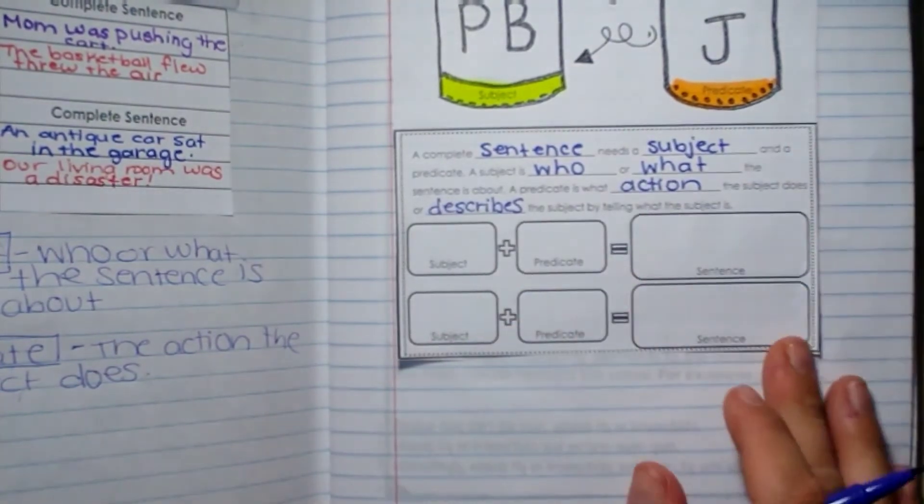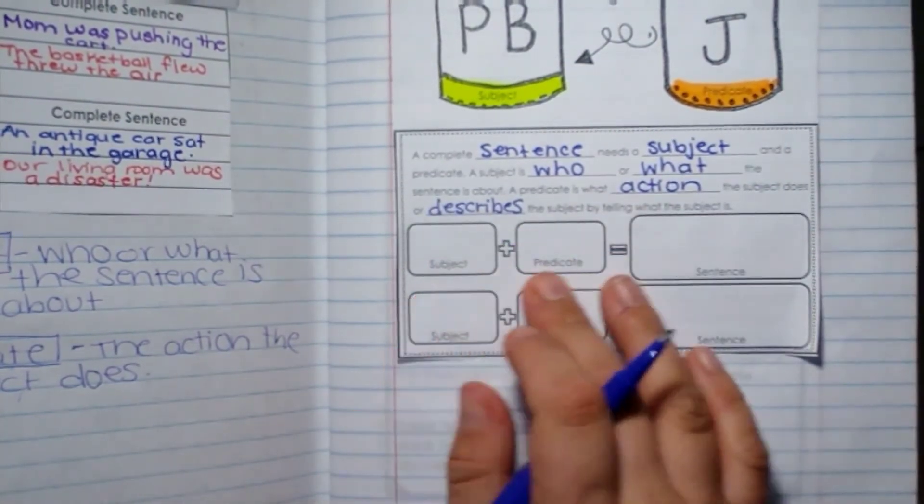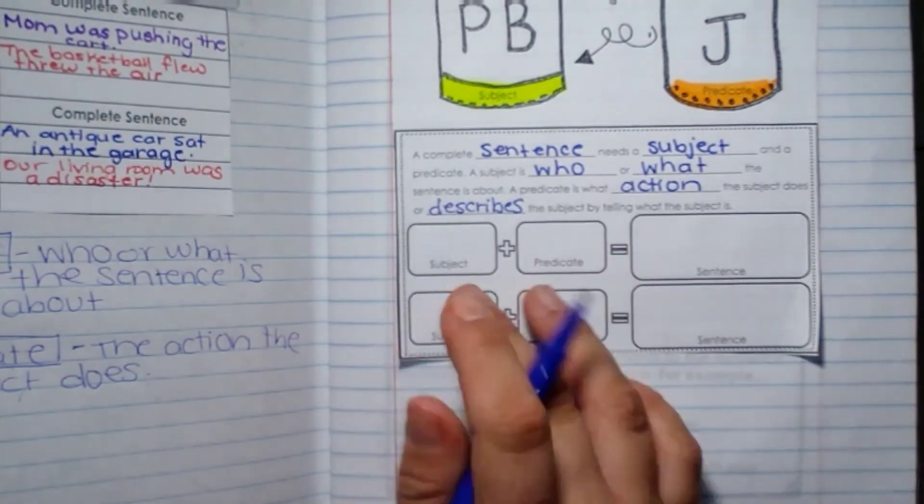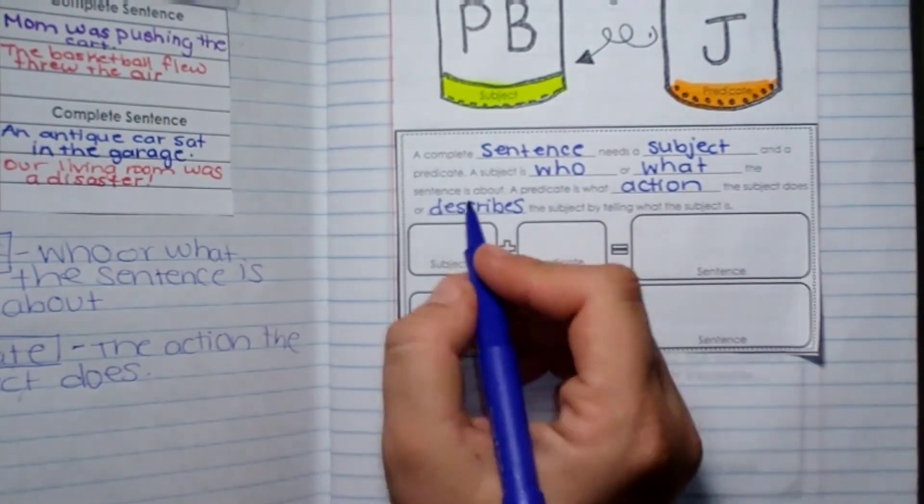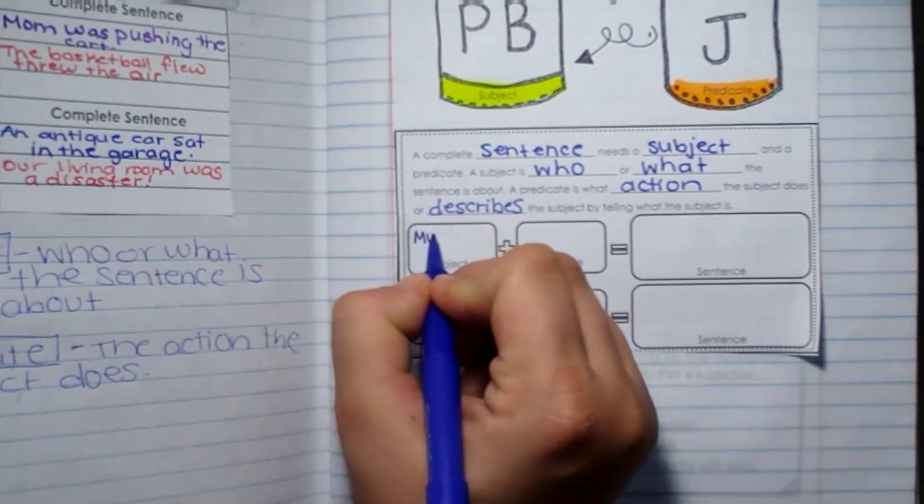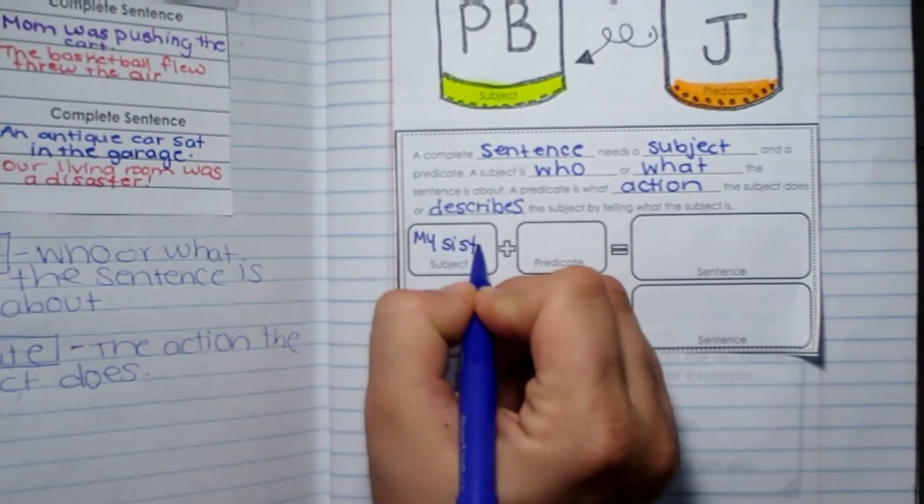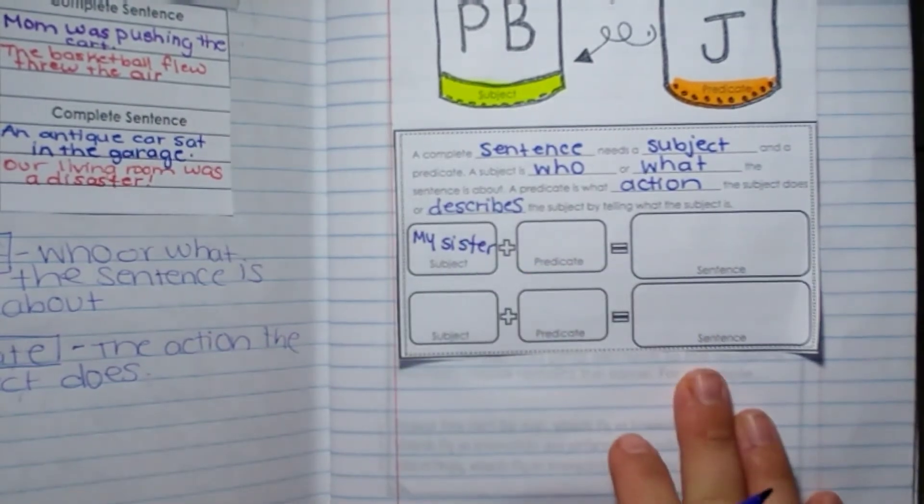So we're going to come up with a couple of these different words, okay, to put together to make a whole sentence. So let's come up with my sister is my subject.